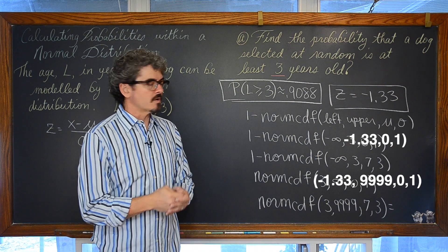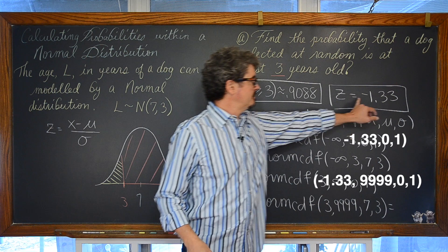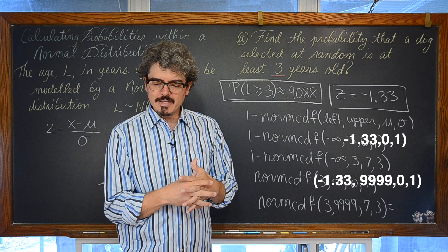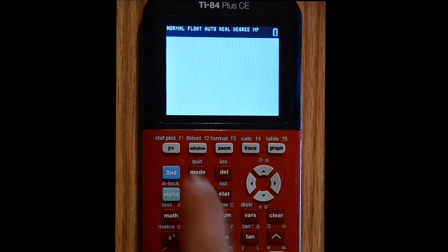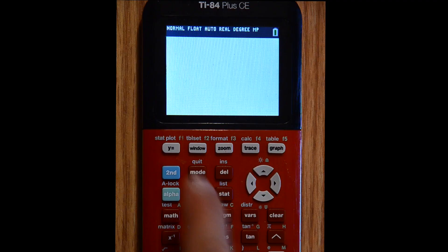If you are using the z-score chart with the rounded value of z equals negative 1.33, you would get something around 0.9082. The calculator gives the more precise answer of 0.9088. Let's move on to Part B.